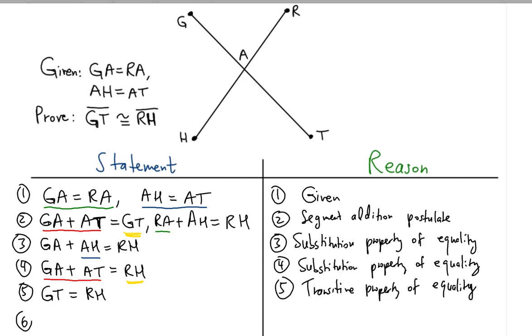The last step is to deduce that since GT is equal to RH, then GT line segment is congruent to RH line segment. This is the definition of congruence.